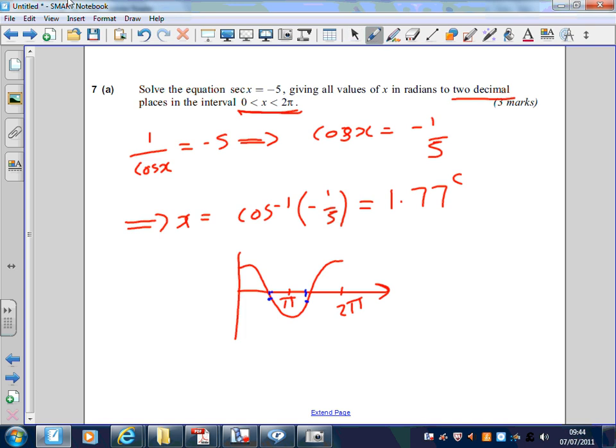To get that, by the symmetry of the graph, x equals 2 pi minus 1.77. So I'm going to take the full answer here in the calculator.